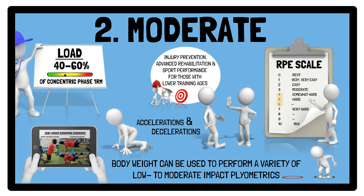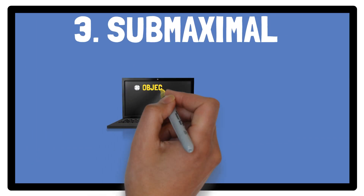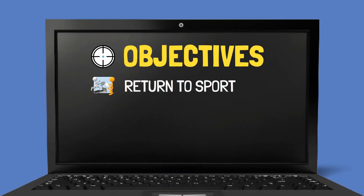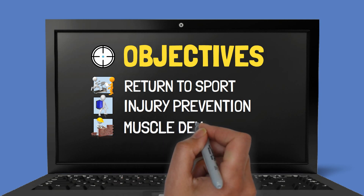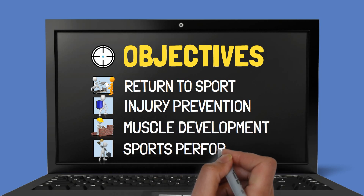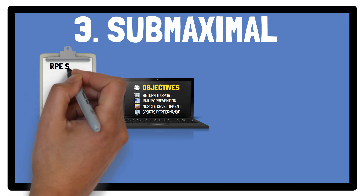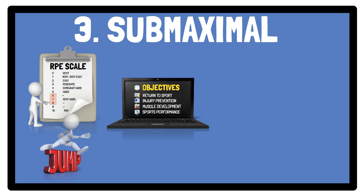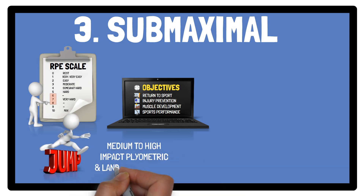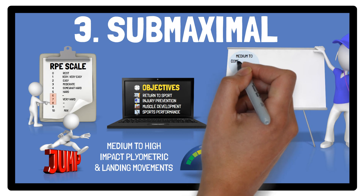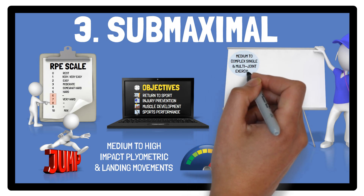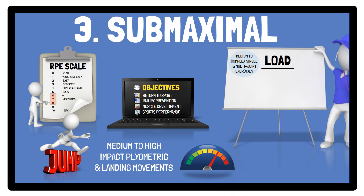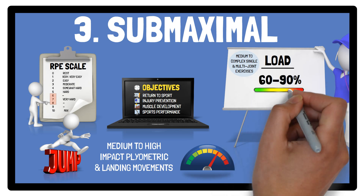Moving on to sub-maximal eccentric exercises, where objectives can include returning to sport, injury prevention, muscle development, as well as enhancing sports performance. The intensity is suggested to be between 6 and 8 out of 10 on the RPE scale, with body weight used to perform medium-to-high-impact plyometric and landing movements. Medium-to-complex single and multi-joint exercises are also suggested at this level, using loads between 60 and 90% of the concentric phase 1RM.